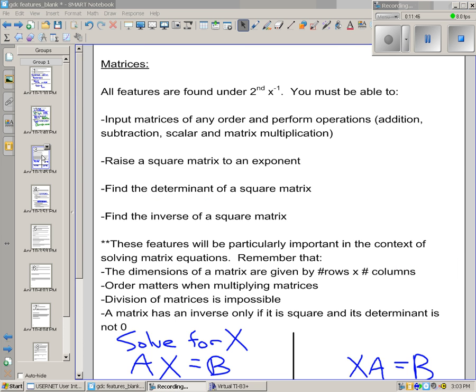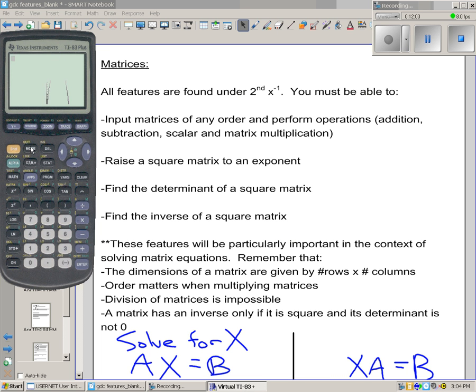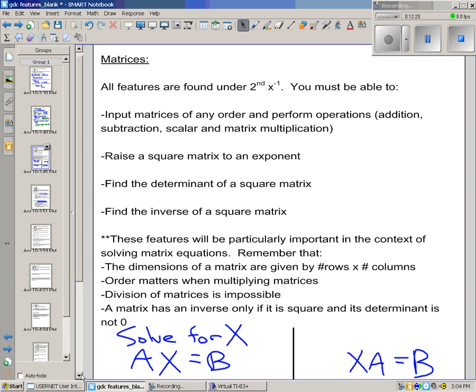As far as matrices go, you need to be able to input matrices of any order, perform operations. All this stuff is under your matrix menu. Raise a square matrix to an exponent. Find the determinant of a square matrix. And that's just the determinant is under your matrix menu. And just go over to math. So det. Find the inverse of a square. You also need to be able to find the inverse of a square matrix without a GDC. Some key ideas. The dimensions of a matrix are number of rows by number of columns. Order matters when multiplying matrices. Division of matrices is impossible. And a matrix only has an inverse if it's square and its determinant is not zero.